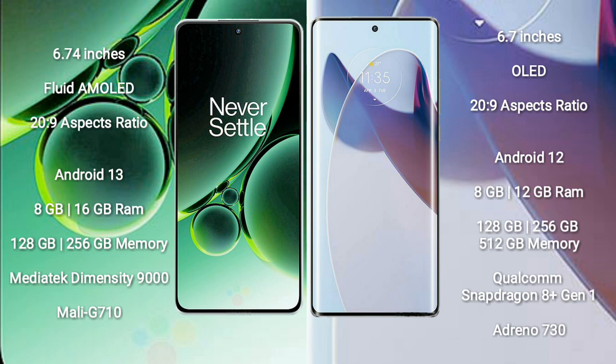OnePlus Nord 3 comes with 8GB or 16GB RAM and 128GB to 256GB internal storage. It features the MediaTek Dimensity 9000 processor and Mali-G710 GPU.